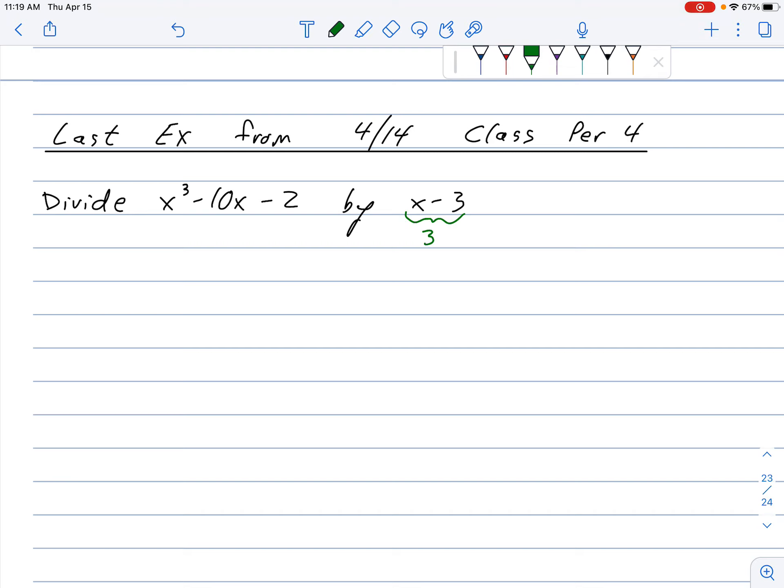Three. We're always setting our factors equal to zero to find the zero or the root that comes out, and it's 3. And that is the number I put in the seat.